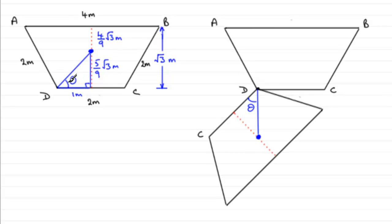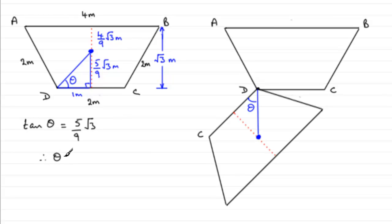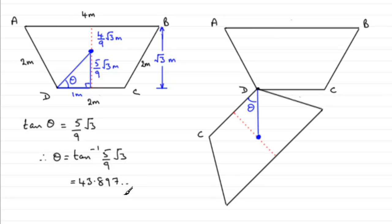If we do tan of angle theta, it's going to compare the opposite side over the adjacent. So tan(θ) equals the opposite over the adjacent, and since we're dividing by 1 it's just going to be 5/9 root 3. To get theta, we do the inverse tan of 5/9 root 3. Making sure your calculator is in degrees mode, that gives 43.897... degrees, which rounds to 43.9 degrees to 3 significant figures.